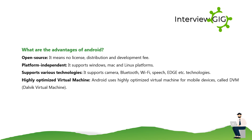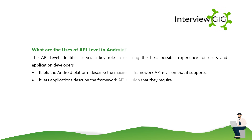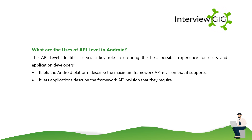What are the uses of API level in Android? The API level identifier serves a key role in ensuring the best possible experience for users and application developers. It lets the Android platform describe the maximum framework API revision that it supports, and it lets applications describe the framework API revision that they require.